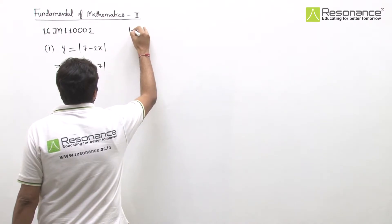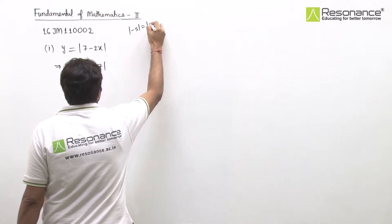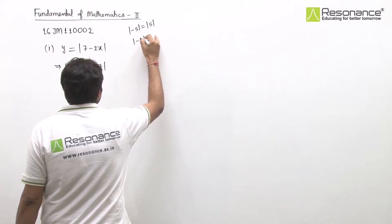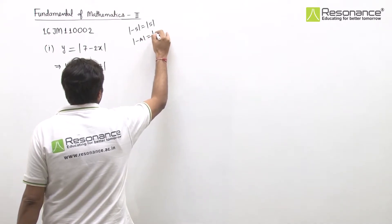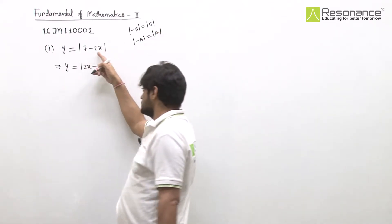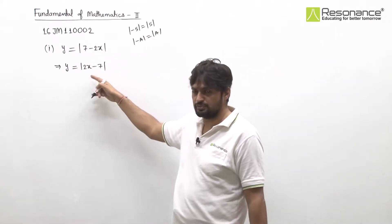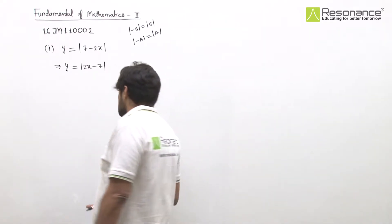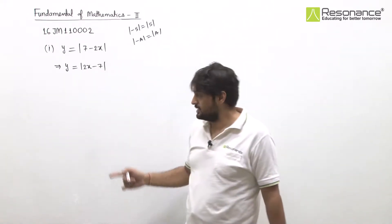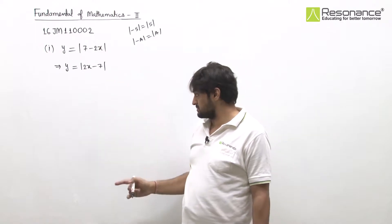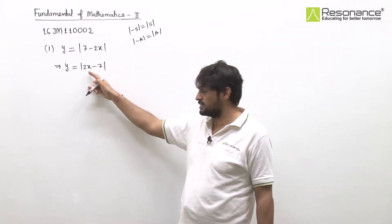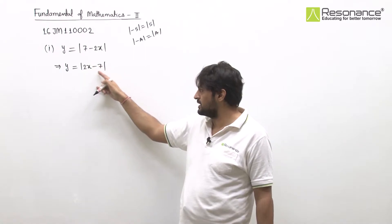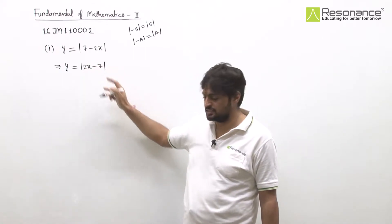Because mod of minus 5 and mod of 5 are the same, we can write mod of 7 minus 2x as mod of 2x minus 7. For the graph, the turning point — the sign changing point — occurs where 2x minus 7 equals 0, that is when x equals 7 by 2.